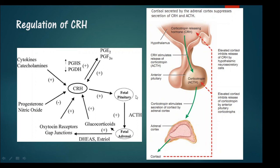CRH produces a positive effect on the fetal pituitary and the fetal adrenal gland. The hypothalamus releases CRH, which stimulates the anterior pituitary to release ACTH. The ACTH secreted by the anterior pituitary activates the adrenal cortex to release cortisol. The cortisol produced then provides negative feedback inhibition of both the anterior pituitary and the hypothalamus.